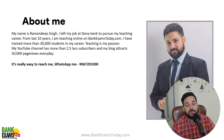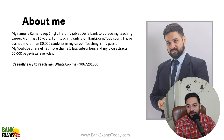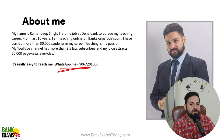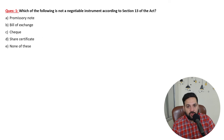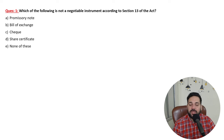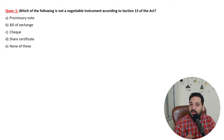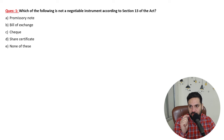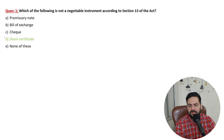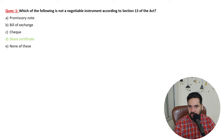This is my WhatsApp number where you can ask your doubts and I'm going to answer them. Which of the following is NOT a negotiable instrument as per Section 13? Yes, it is essential to remember the section number. Share certificate is NOT a negotiable instrument. Promissory notes, bill of exchange, and checks — these are the three kinds of negotiable instruments.